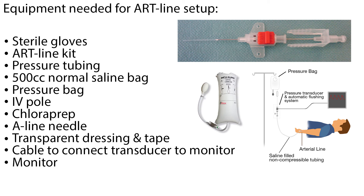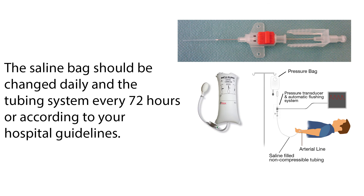The following equipment is needed: sterile gloves, an art line kit, pressure tubing, 500 cc's of normal saline with air removed from the bag, a pressure bag, IV pole, chloroprep, a line needle, transparent dressing and tape, a cable to connect the transducer to the monitor, and the monitor. The saline bag should be changed daily and the tubing system every 72 hours or according to your hospital guidelines.